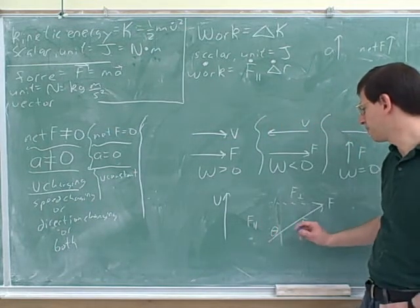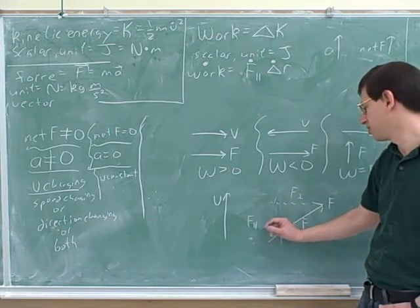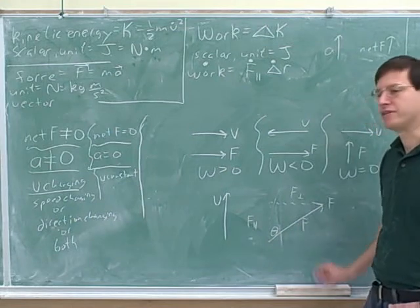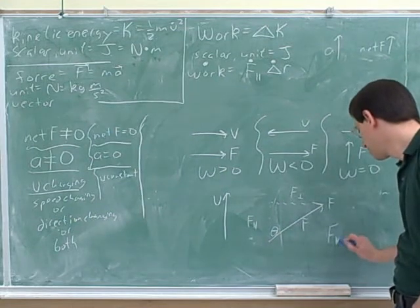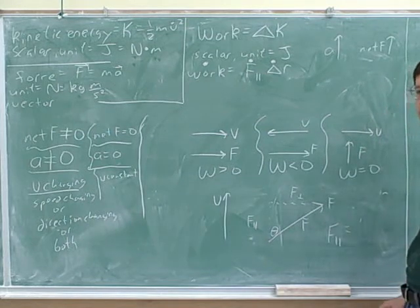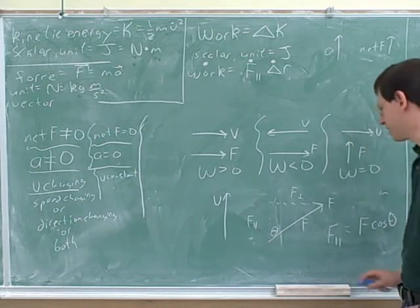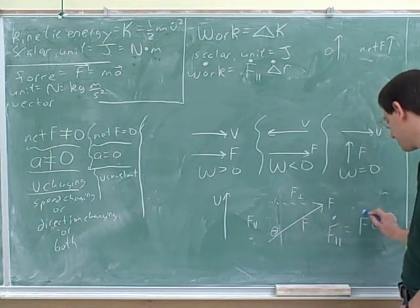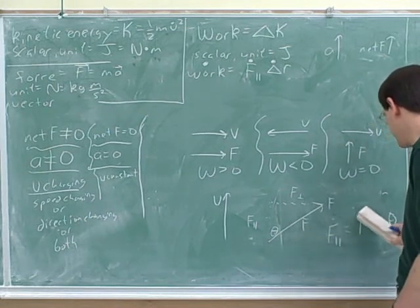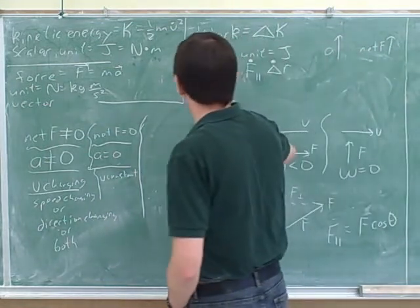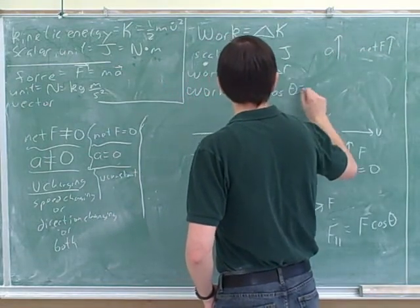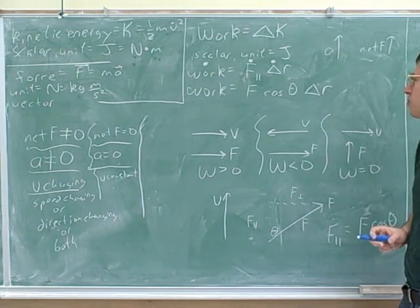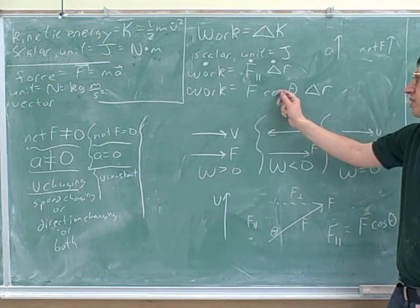Theta is the angle between the force and the velocity. The component of F that's parallel to the velocity is adjacent to theta, so f-parallel equals F times cosine of theta. This gives us the work formula: work equals F times cosine theta times delta r. This is the formula you'll see in the textbook and will need for homework.